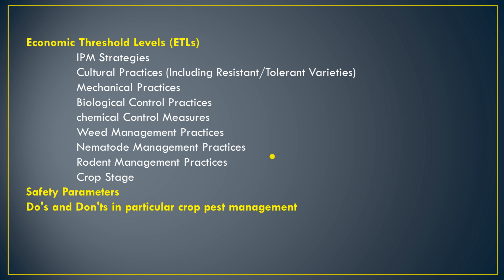When pest population reaches the Economic Threshold Level, we need to adopt IPM strategies. In IPM strategies we use cultural practices, mechanical practices, biological control, chemical control measures, weed management, nematode management, rodent management, etc.